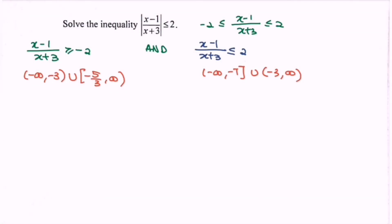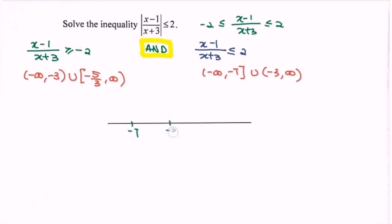Since this is the absolute value inequality, we focus on the n — meaning we have to combine the two intervals using intersection. Illustrating on the real number line, we have the values negative 7, followed by negative 3, and then negative 5 over 3.